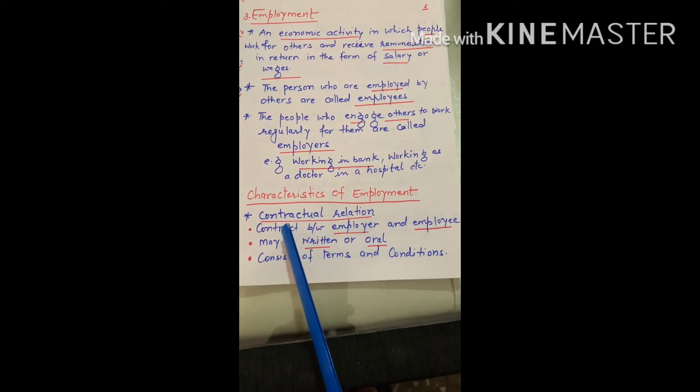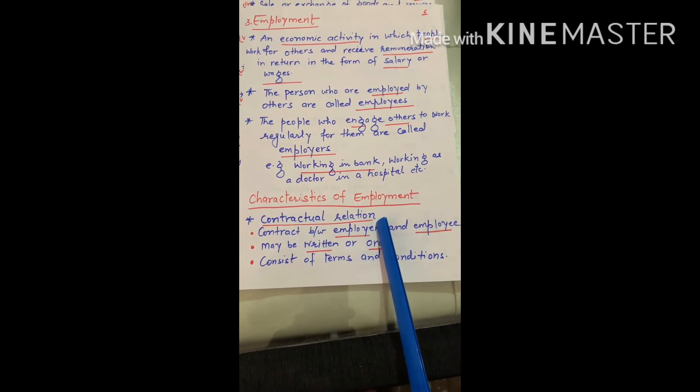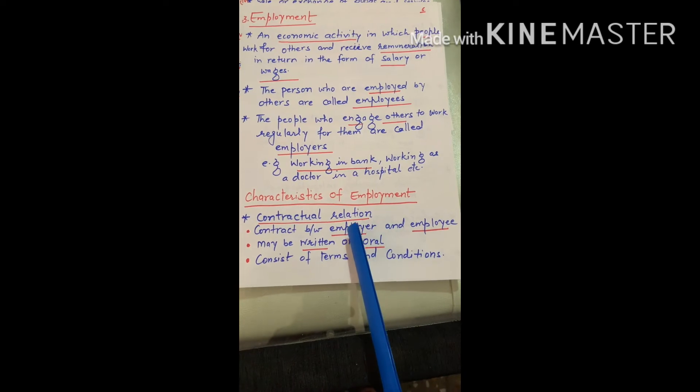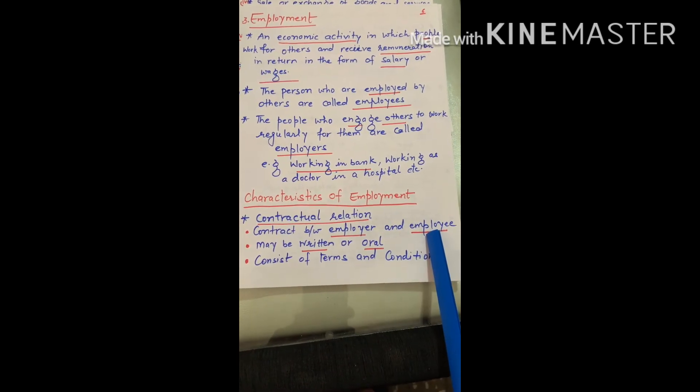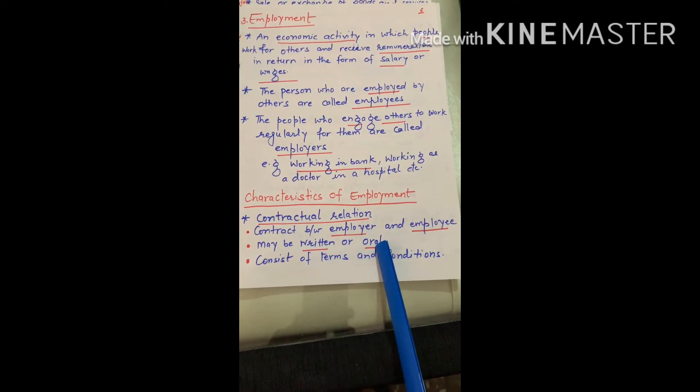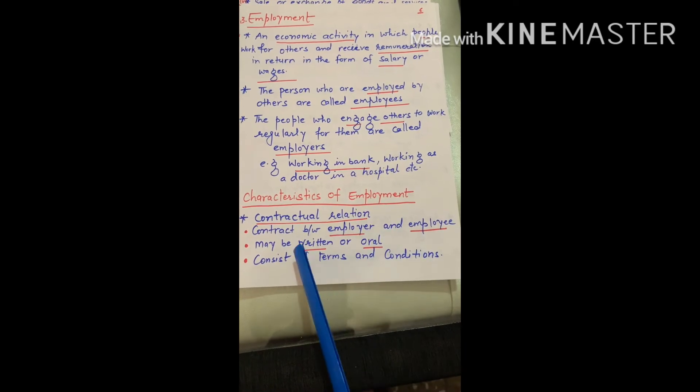There are the characteristics of employment. First is contractual relation. In employment, contract between employer and employee can be written or oral with all rules and regulations and terms and conditions of the job.